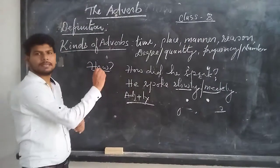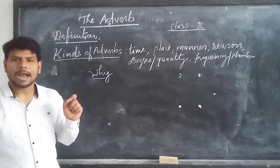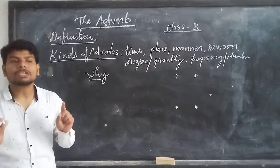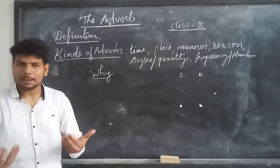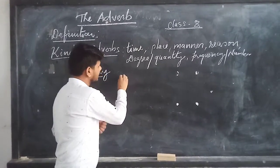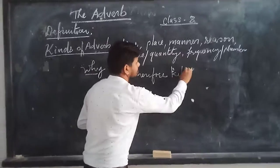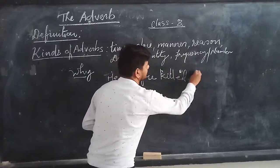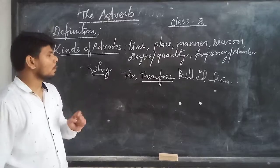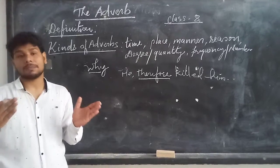Then we talk about the next part, that is adverb of reason. Adverb of reason talks about the question 'why' — why the action has taken place, or what the reason for a particular action is. For example, he therefore killed him. So 'therefore' is the adverb of reason. The question would be: why did he kill him? He was his enemy, therefore he killed him.